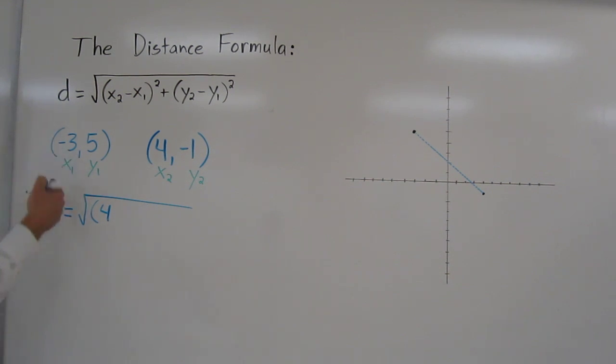x₁ is a negative number, so minus negative 3 is really just plus 3. And then y₂ is our negative 1 minus 5.